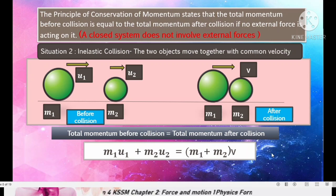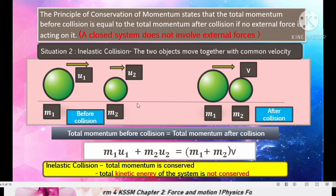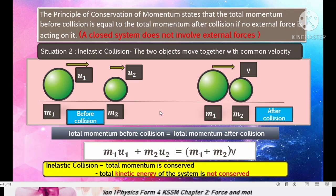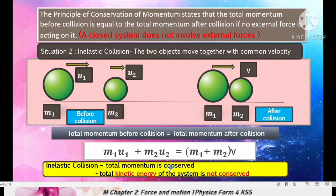For inelastic collision, total momentum is conserved. However, total kinetic energy is not conserved — the initial kinetic energy is converted to other forms such as heat energy or sound energy. Therefore, total kinetic energy after collision is smaller than the initial kinetic energy. To summarize: in inelastic collision, total momentum is conserved but total kinetic energy is not conserved.